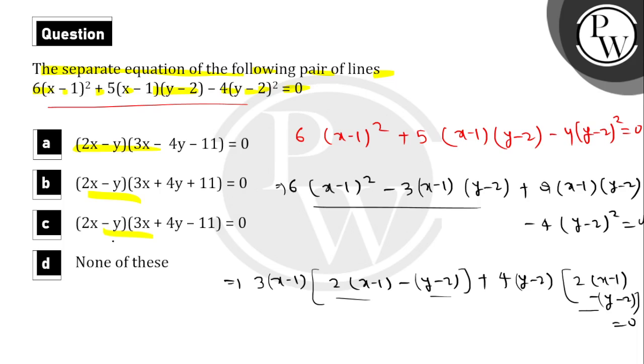So which option matches? (2x-y)(3x+4y-11) = 0. Option C matches. Option C is the correct option. Hope you understood it well. Best of luck, thank you.